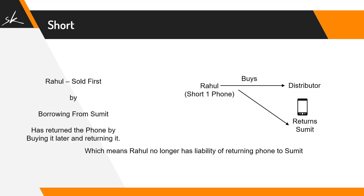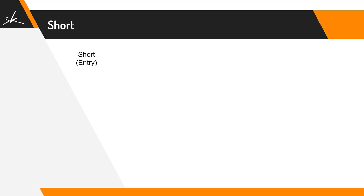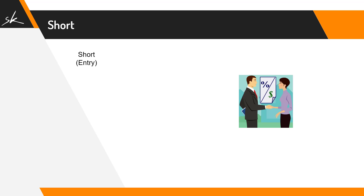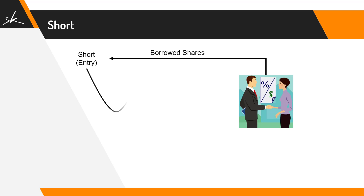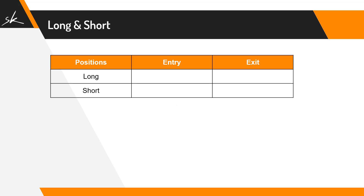This is how short selling works. Similarly, in the stock market, whenever you take a short position, you are borrowing shares from your broker. And because you're borrowing these shares, at the end of the day when you buy them back, those shares go back to your broker. So in the stock market, there are only two kinds of positions: long — buying first and selling later — and short — selling first and buying later.